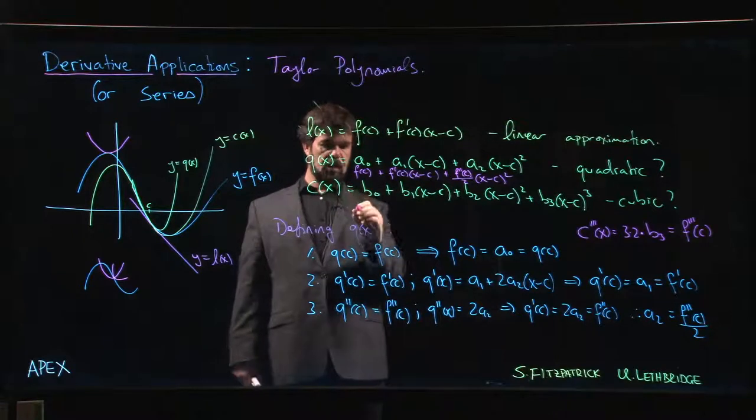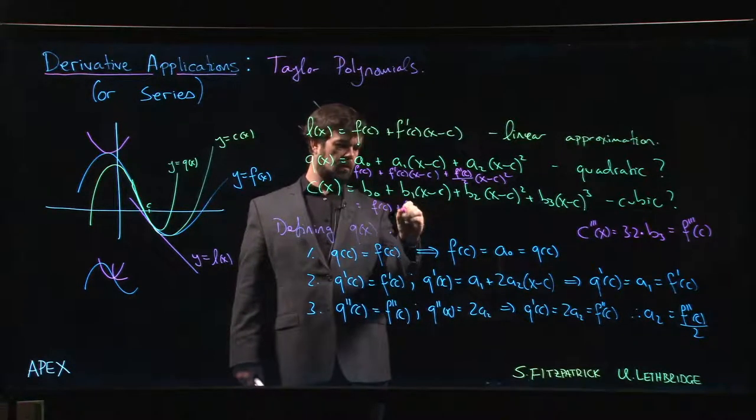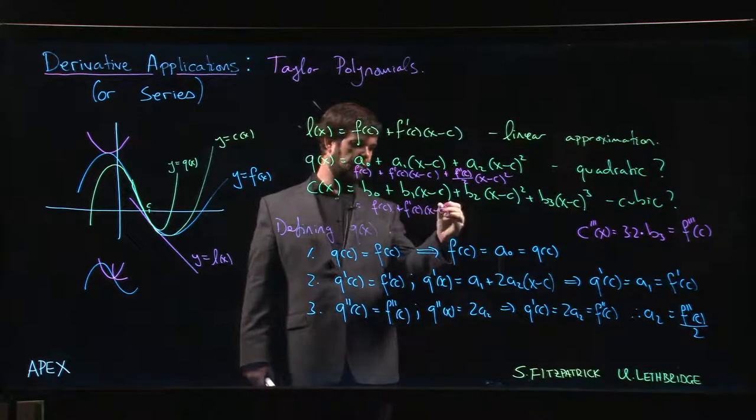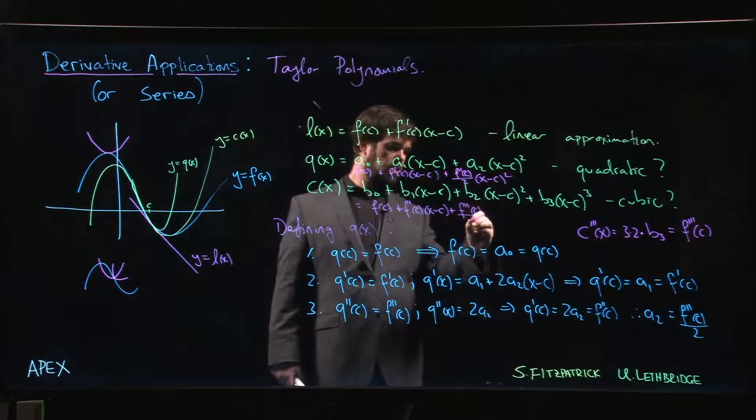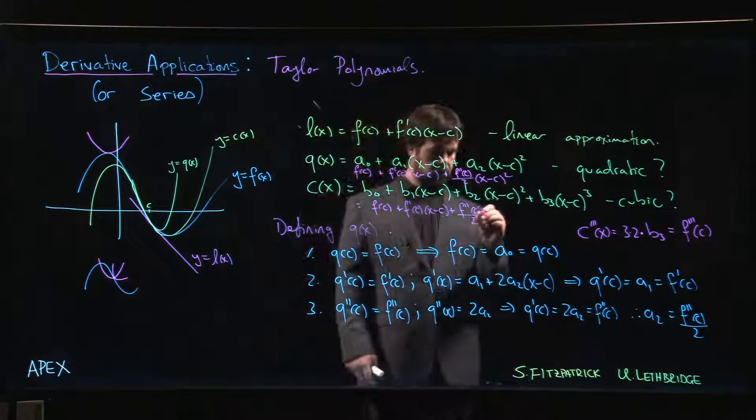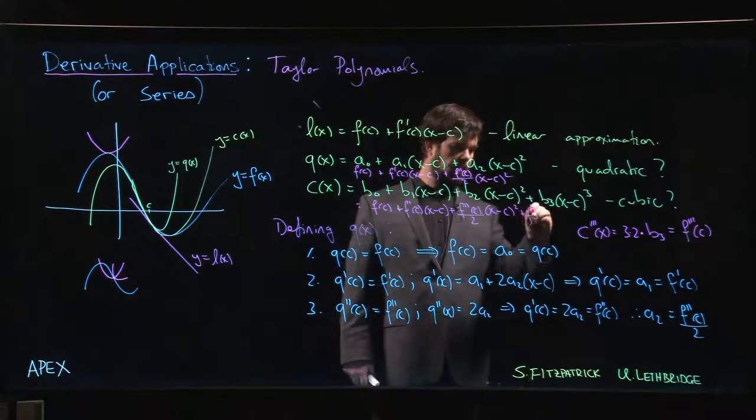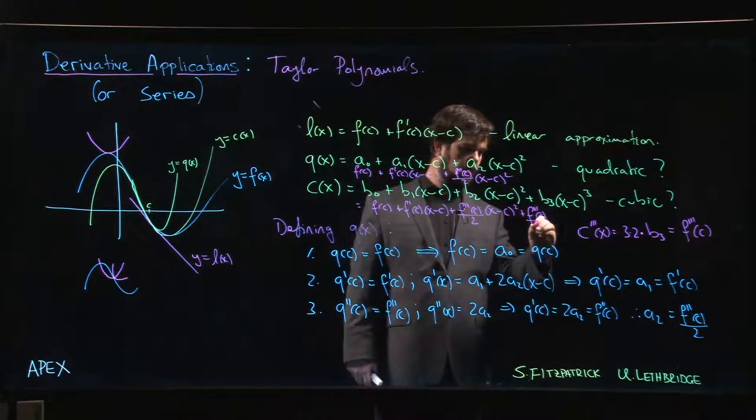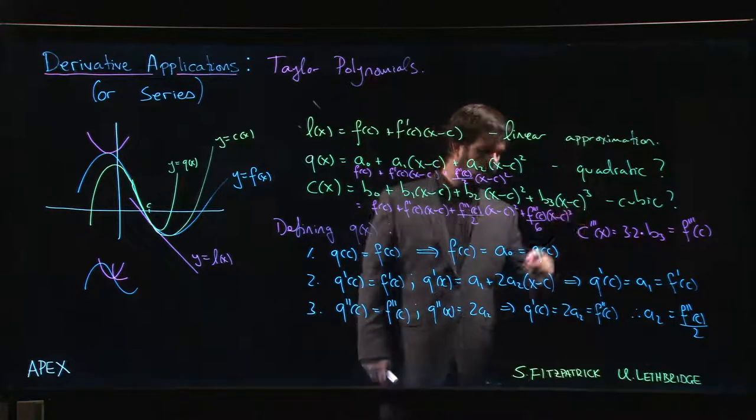The cubic approximation should be F of c plus F prime of c times x minus c plus F double prime of c over 2 times x minus c squared, and then F triple prime over 6 times x minus c cubed.